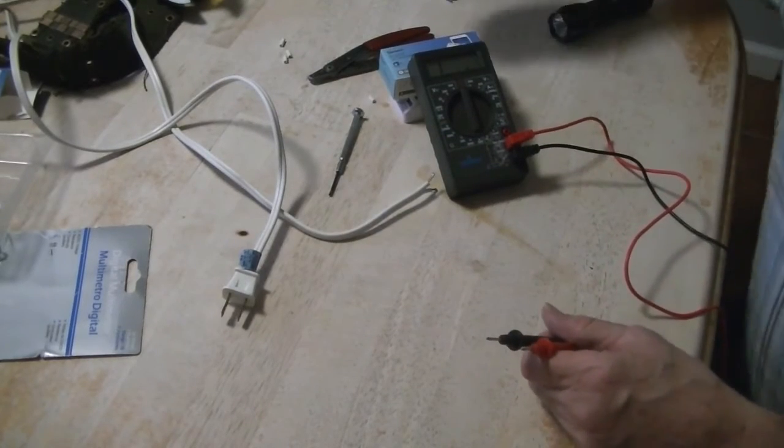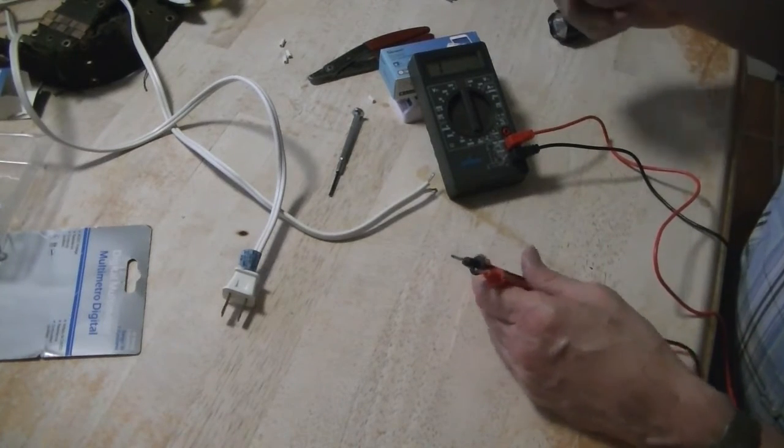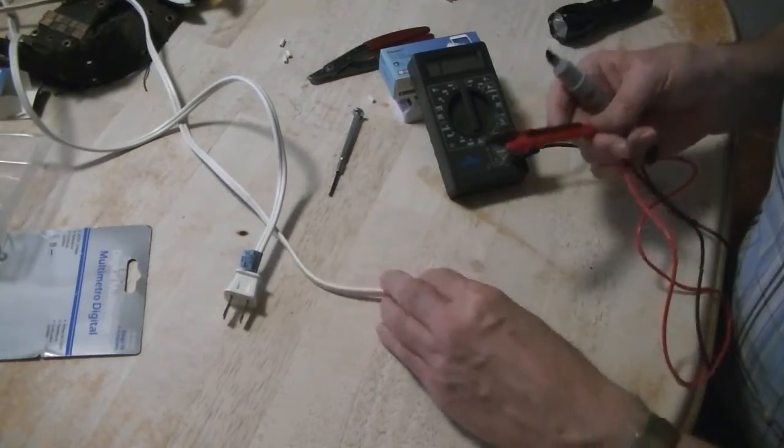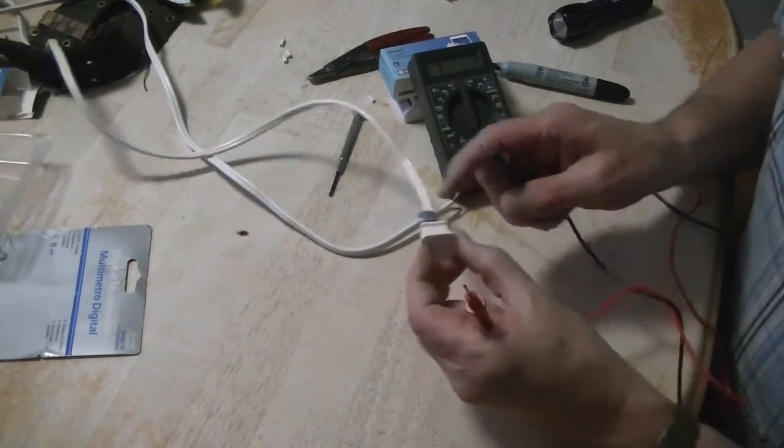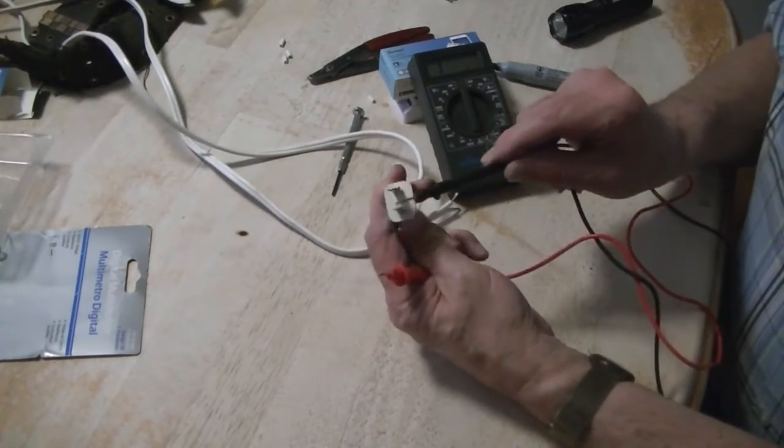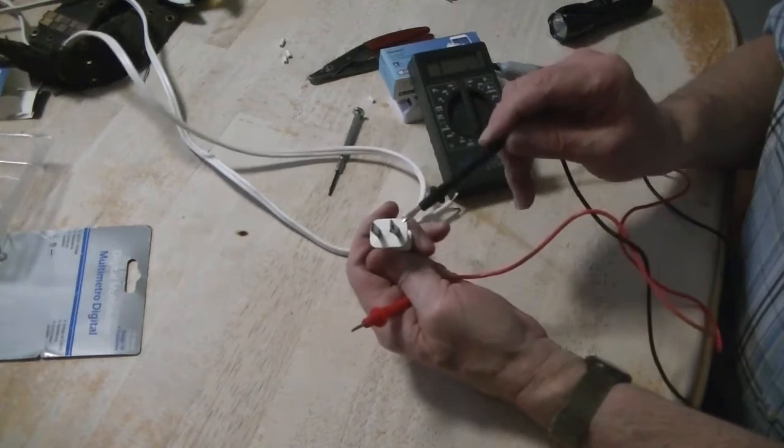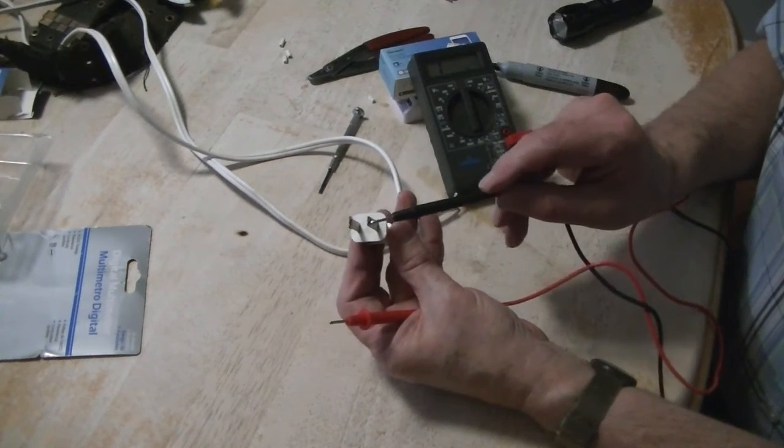Since this little device uses polarity - neutral and hot for in and out - I don't really know if it matters for sure, but I'm gonna verify it. Your hot wire is the narrow blade and the neutral is the wider blade, so I'm gonna mark the hot lead.